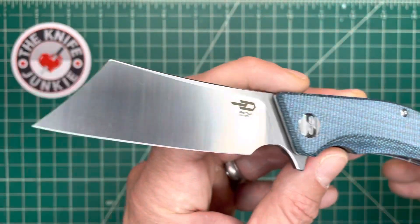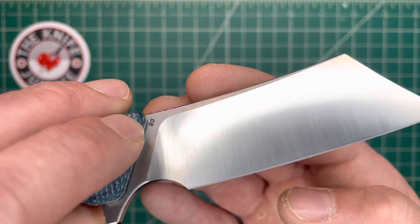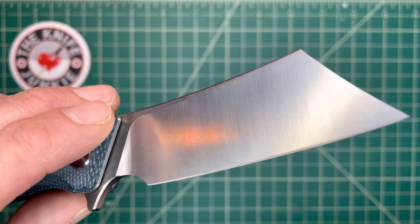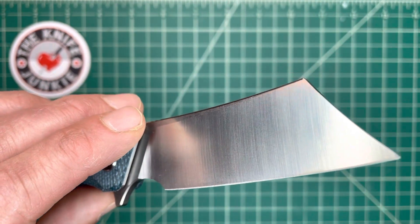Okay, so let's look at this D2. I love the vertical sort of machine satin, those grind lines on this just look really good.